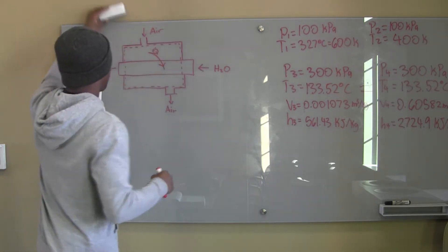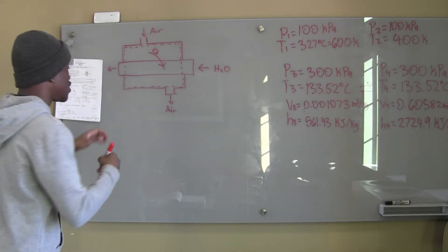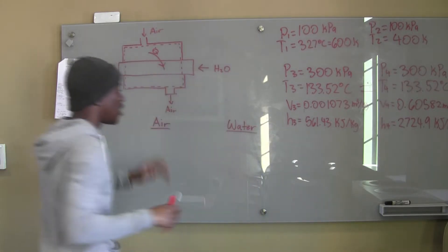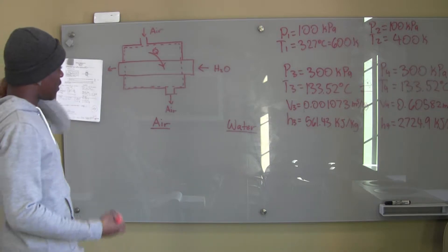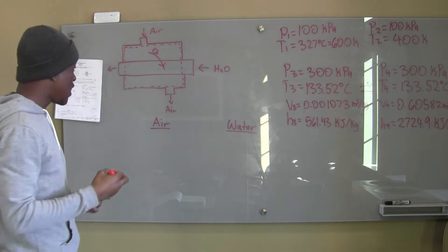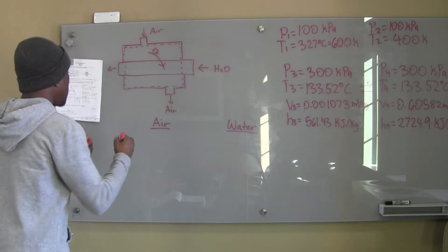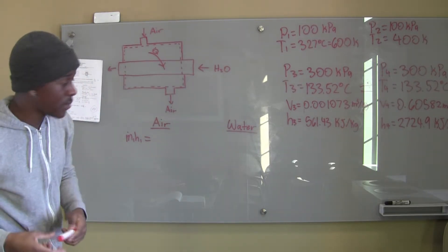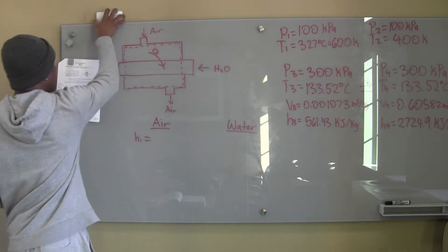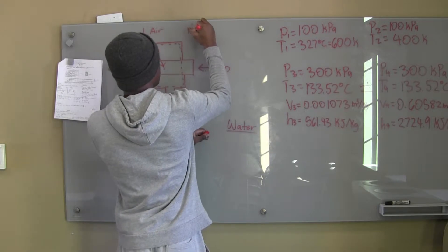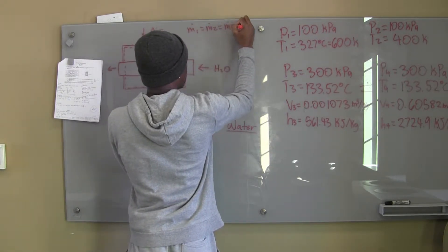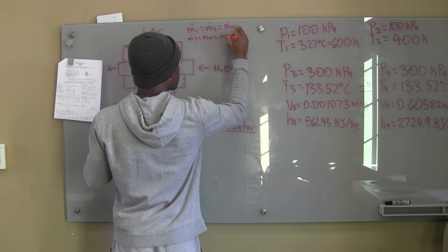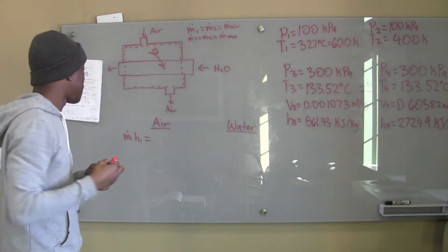With heat exchangers, we have to look at the air and water independently to get our equations. We're dealing with an open system. We know that ṁ1 equals ṁ2 equals ṁ_air, and ṁ3 equals ṁ4 equals ṁ_H2O. I'm noting these equalities because I'll come back to them.